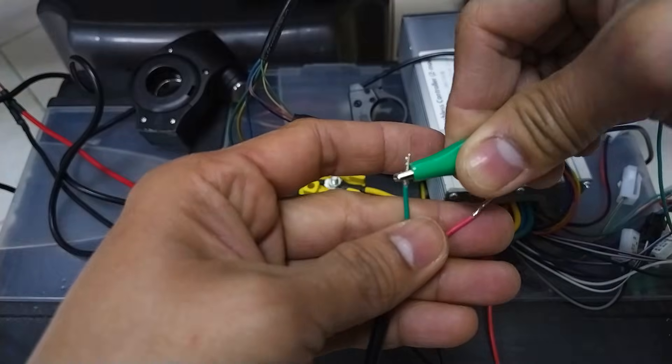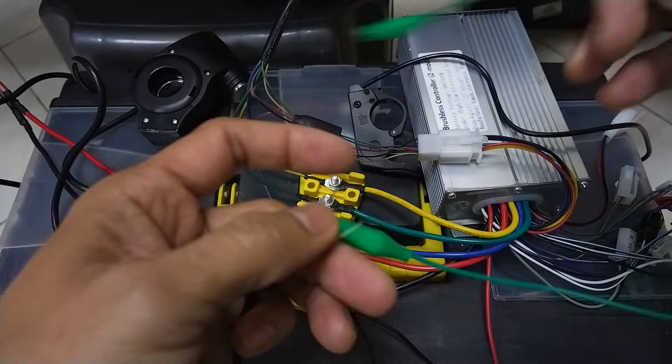The green wire is for the positive line wires of the battery and the controller connected to each other.